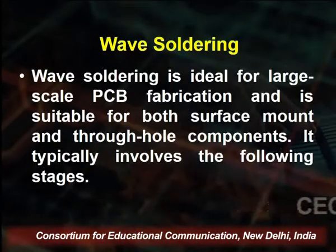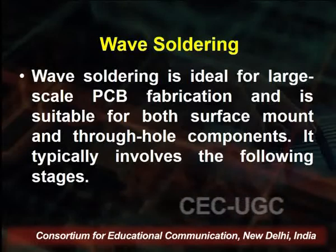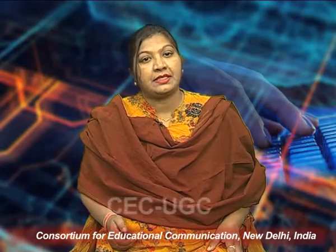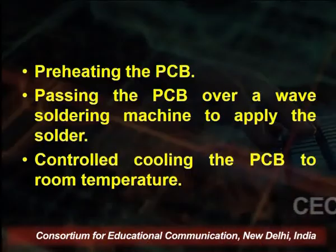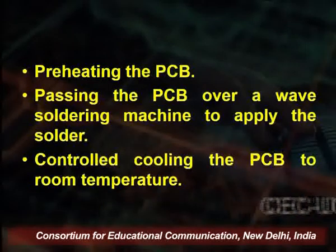Next is wave soldering. Wave soldering is ideal for large-scale PCB fabrication and is suitable for both surface mount as well as through-hole components used in this assembly. It typically involves the following stages: number one is spraying flux onto the PCB to eliminate oxides from the surface of the PCB, prevent secondary oxidation during the thermal process, and lower the surface tension of the solder paste. Then preheating of the PCB, passing the PCB over a wave soldering machine to apply the solder, and then controlled cooling of the PCB to room temperature. These are the processes used in development of SMD.